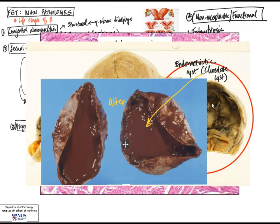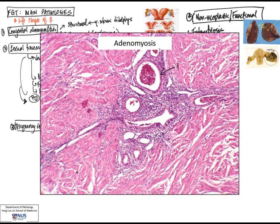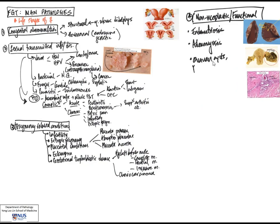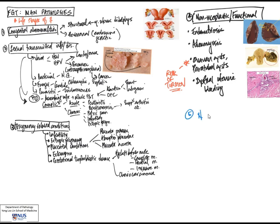These endometriotic cysts occur in the ovaries and are responsive to hormonal cycle changes. Adenomyosis is defined as endometrial tissue — meaning endometrial glands as well as endometrial stroma — located within the uterine myometrium. Also included in this category are ovarian and paratubal cysts, for example follicular cysts from cystically dilated follicles. Anything that enlarges the ovaries, including cysts or tumors, can put them at risk of torsion, which is a surgical emergency. Dysfunctional uterine bleeding is also included here, and this is when there is irregular menstrual bleeding that is not due to structural causes.